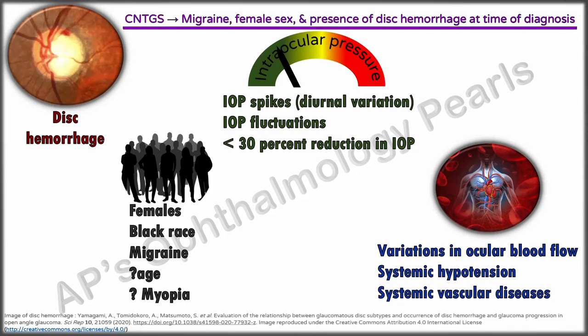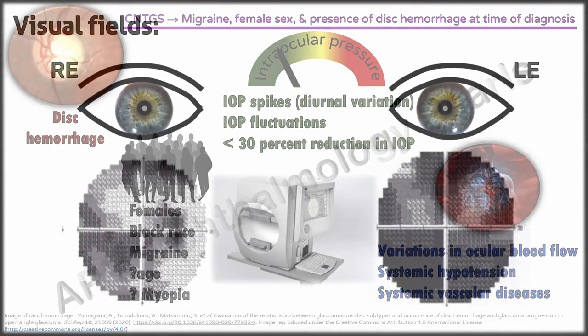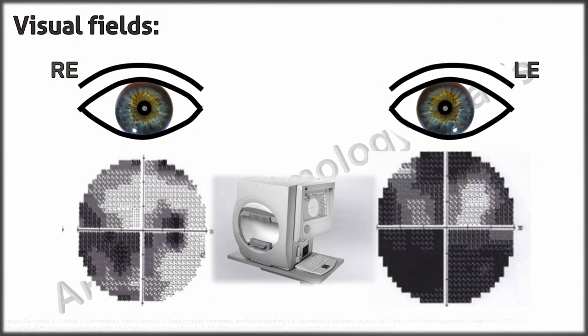The Collaborative Normal Tension Glaucoma Study found migraine, female gender, and the presence of disc hemorrhages at the time of diagnosis to be the prime predictors of risk of faster disease progression without treatment. Our patient has returned from her field study — here are the 24-2 Humphrey fields.